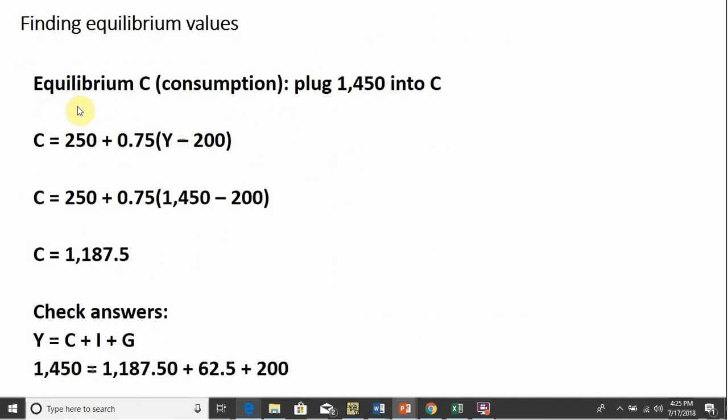To get the equilibrium level of consumption, we write our consumption function down. And for Y, we will plug in 1,450. Doing that, we have our equilibrium level of consumption of $1,187.50.